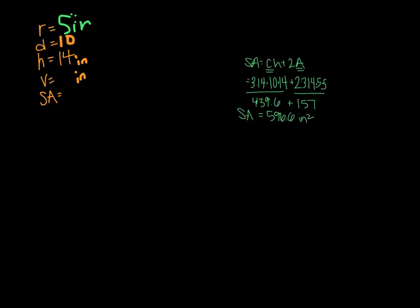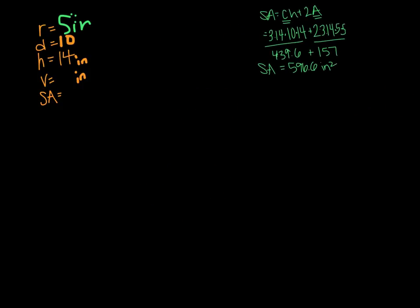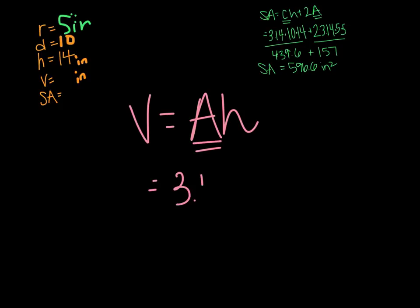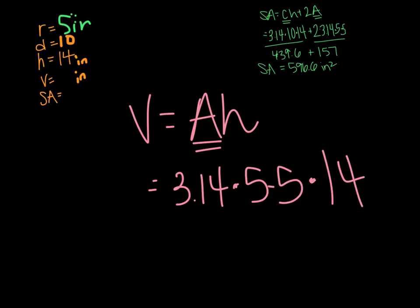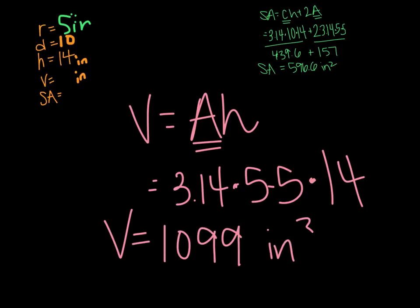Now we move on to volume. The volume formula is V equals AH. A is π r squared, so 3.14 times r, which is 5, times 5, and then times H at the end, which is 14. Type that into your calculator and you get a volume of 1,099 inches cubed.